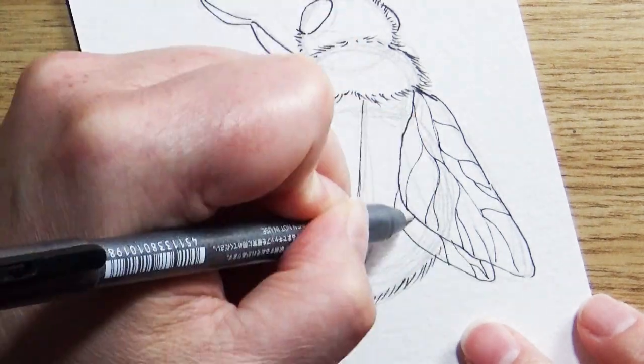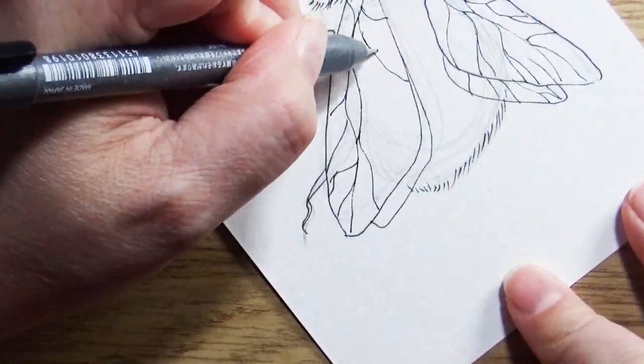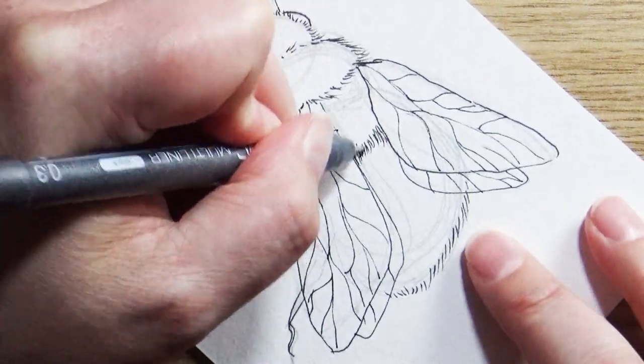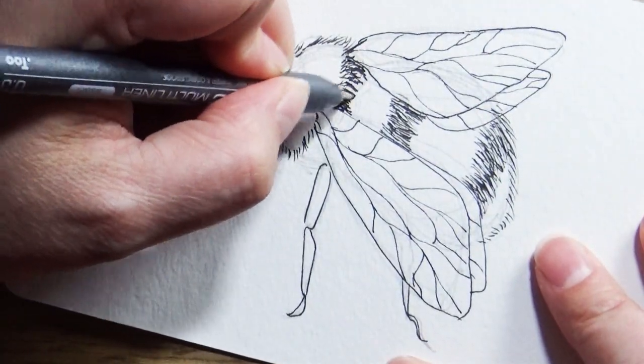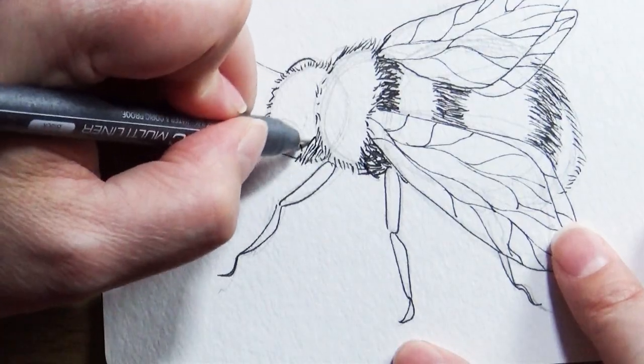Another great brand is Sakura Microns. I'm using a really fine tipped one, I think this one was a 0.01, so it's really fine. But my favorite one is a 0.03 because it's not too big and not too thin.